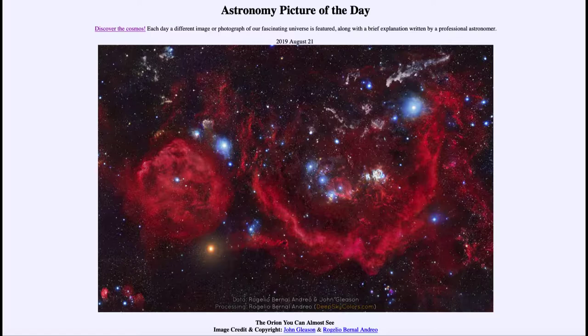Today's picture for August 21st, 2019 is titled The Orion You Can Almost See. So what do we see here? Well, this is an image of the constellation of Orion. It may not look like that at first glance, but if you look towards the center you can see the three stars in the belt.